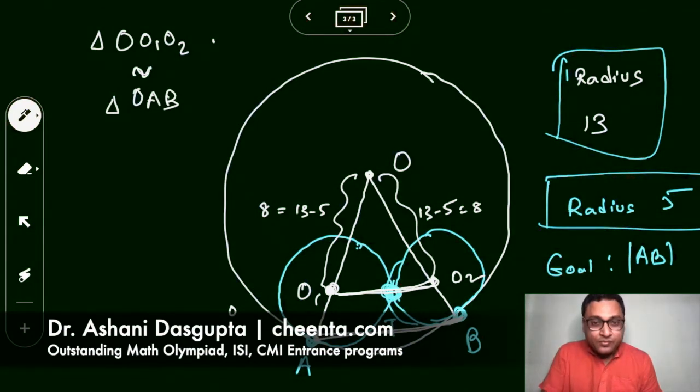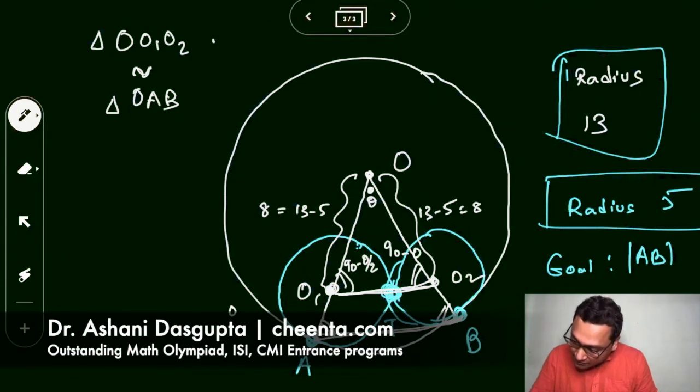These two triangles are similar to each other because this angle is common, these two angles are equal, and these two angles are also equal. So if this is theta, then this is 90 minus theta by 2, and this is also 90 minus theta by 2. So of course the sides are proportional.